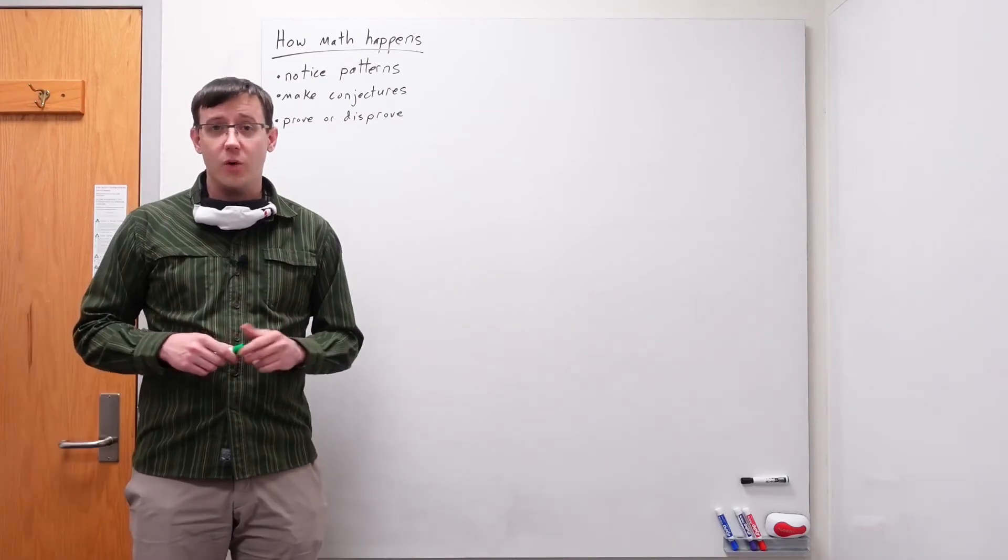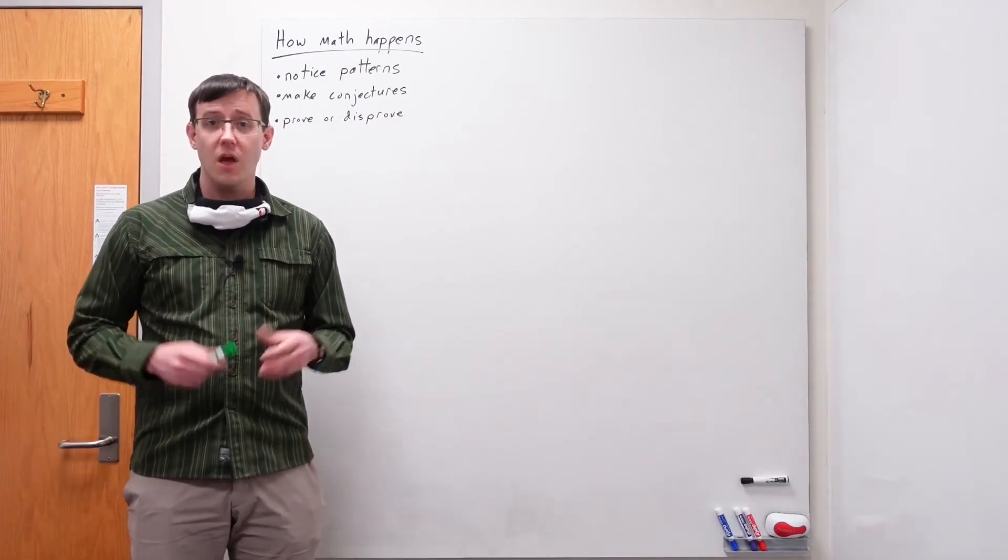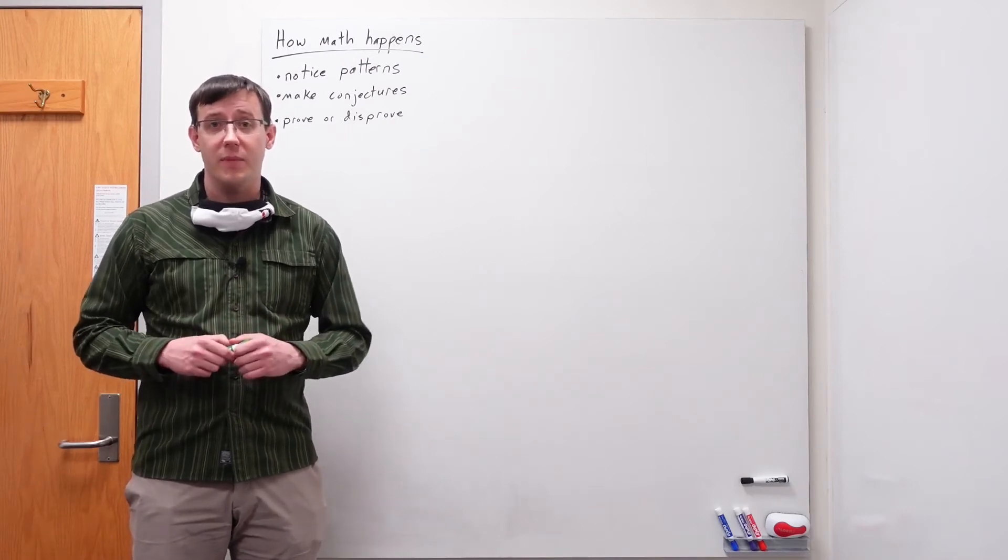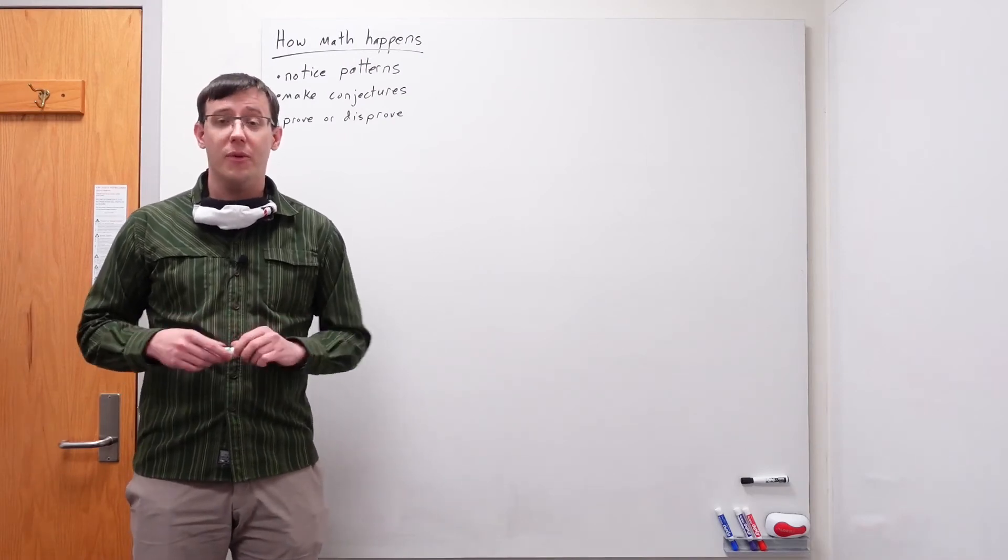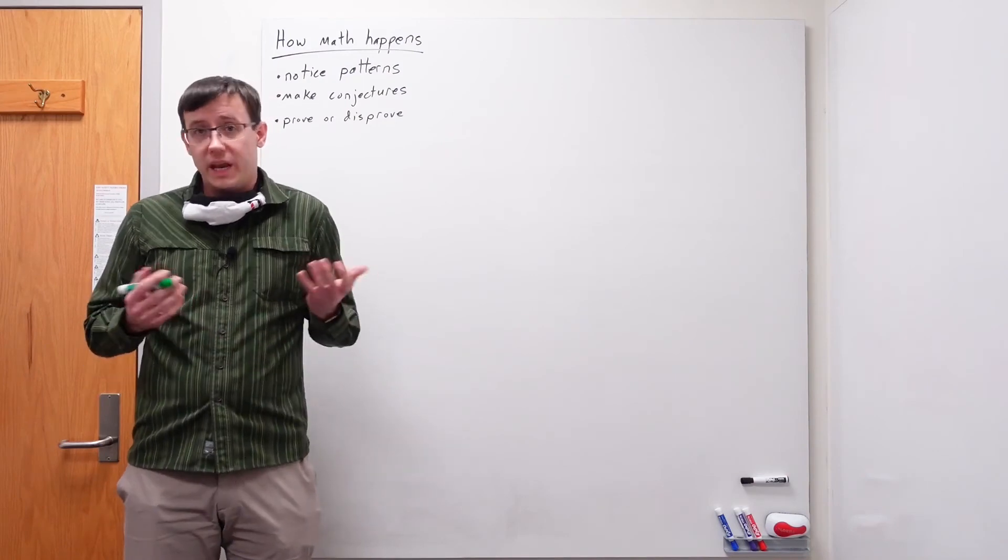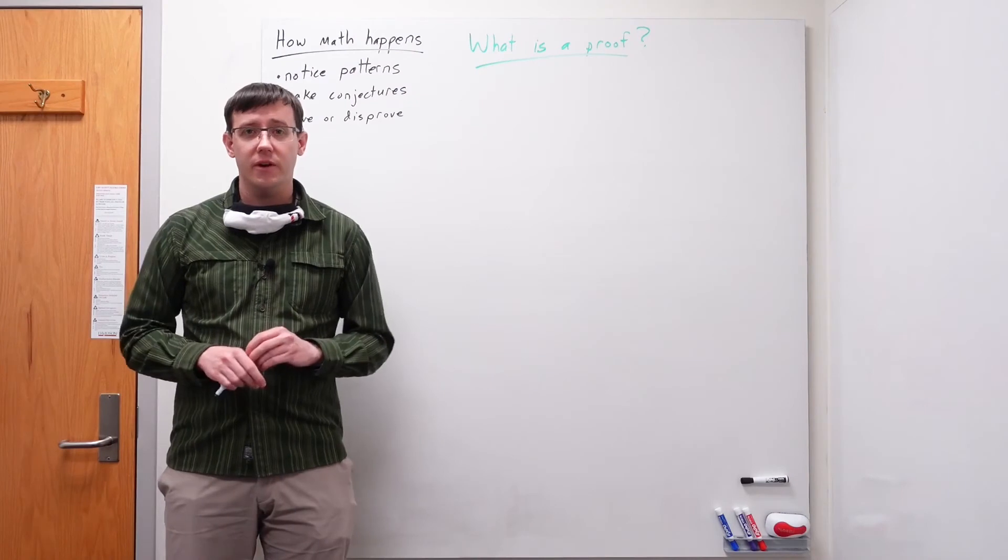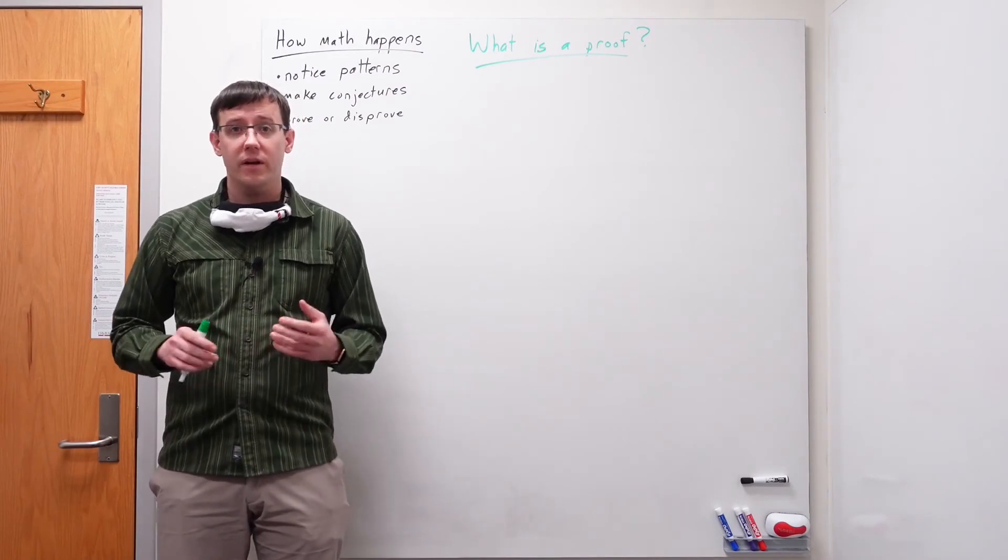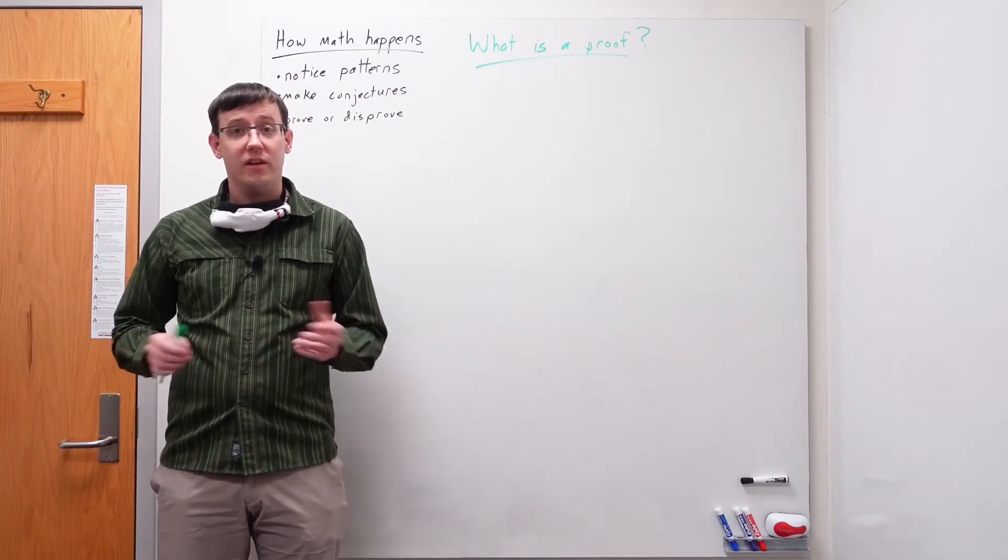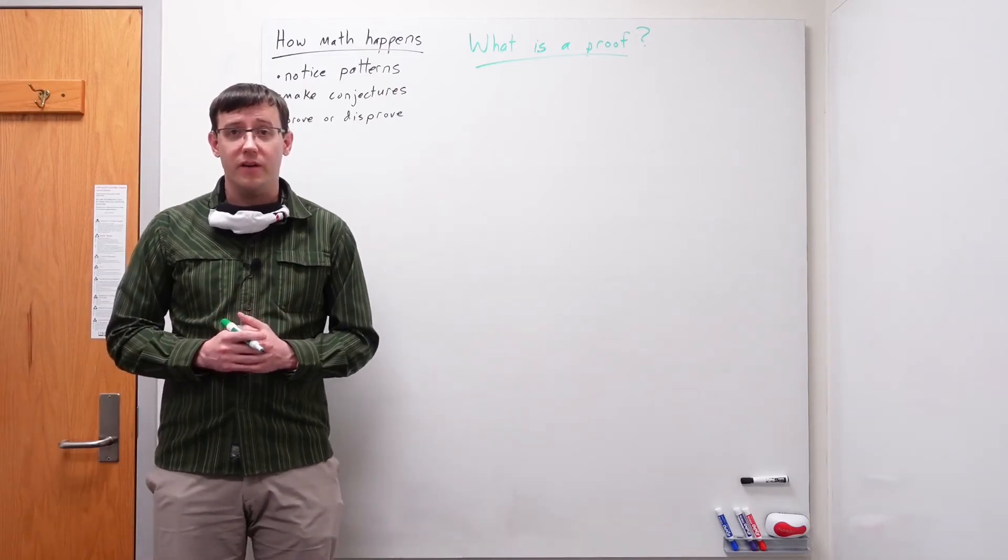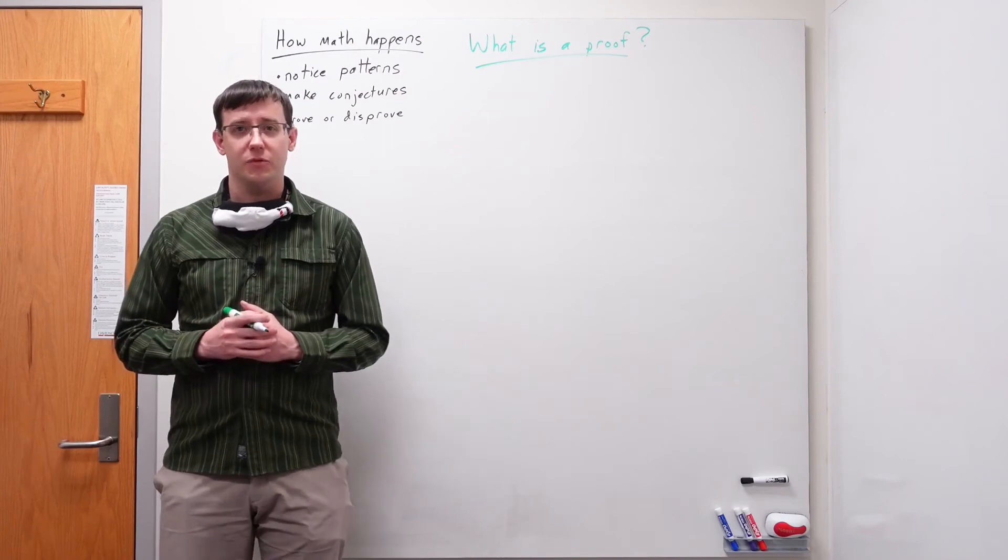The other takeaway from this is a baseline example of a proof. One of the big goals of this class is to help you develop skills in mathematical proof writing. So it's worth pausing for a moment to ask, what is a proof? Well, the proof at the end of our example was a written argument where each sentence followed logically from the last. And in general, a proof is a written argument showing that a statement must be true.